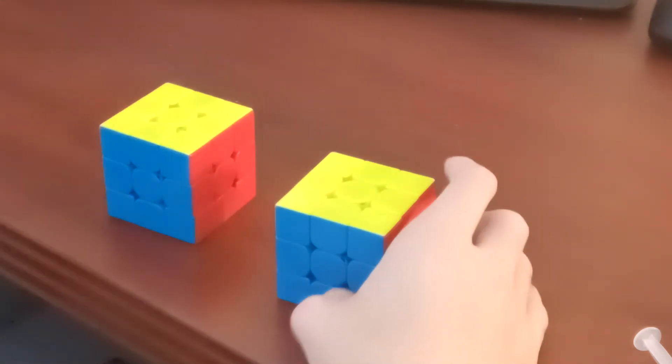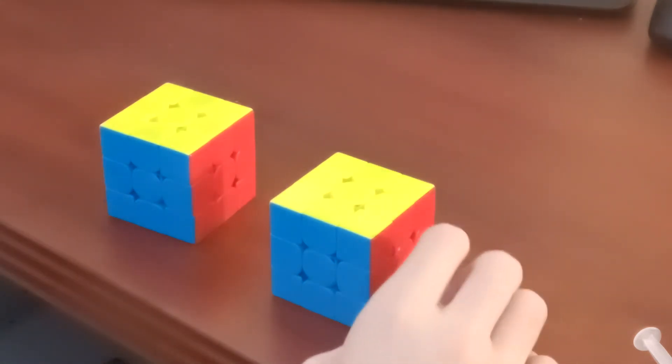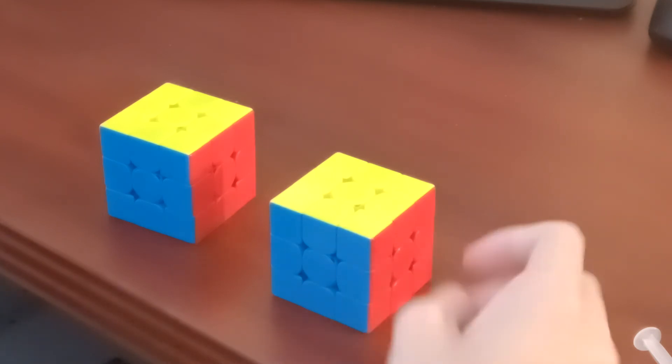After doing that process and doing about maybe an average of 25 solves, your cube should start to feel better. And that's basically how I go about setting up my Worm. Thanks for watching. Hope you enjoyed.